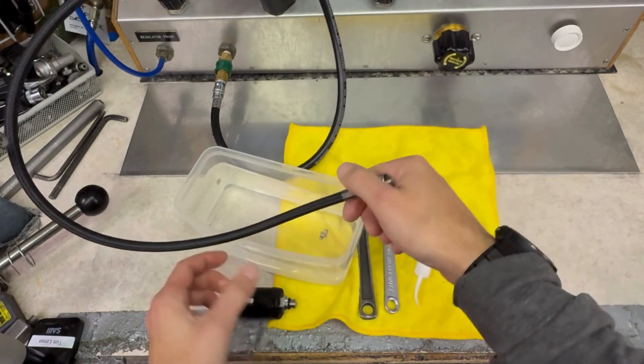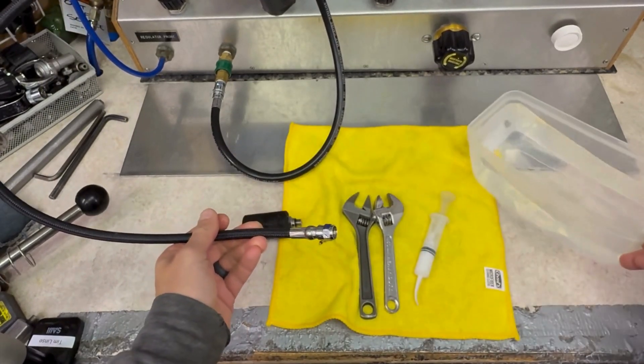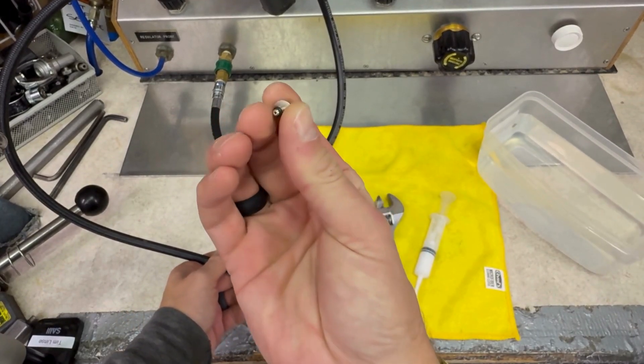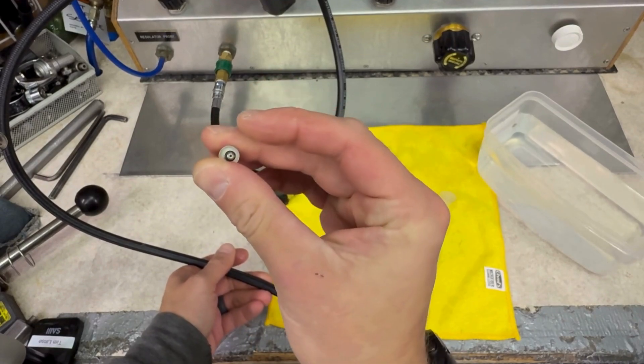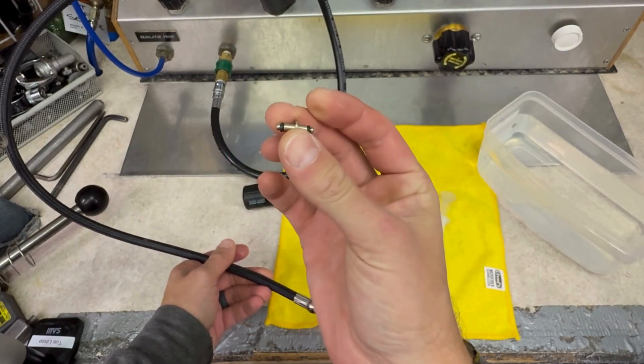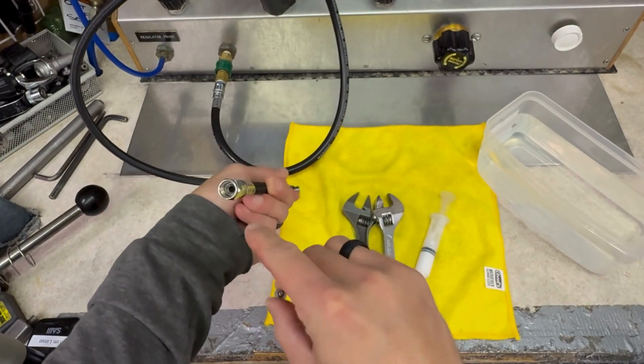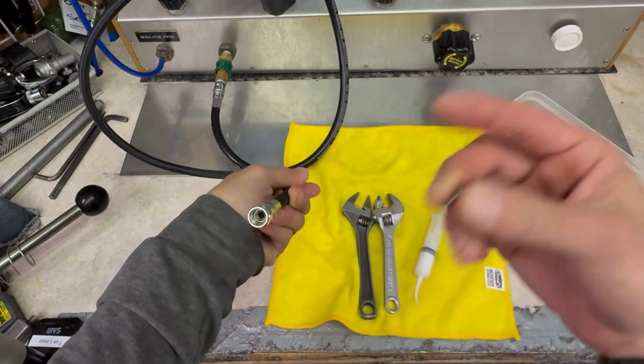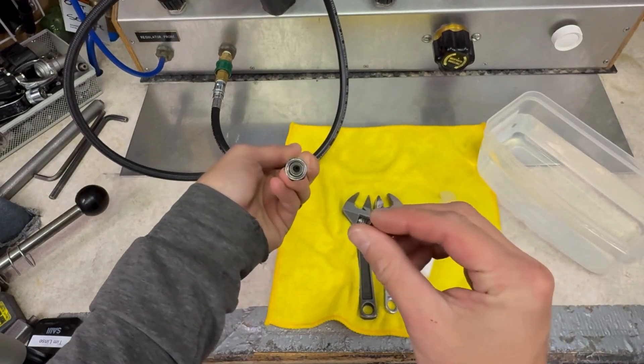So a high-pressure spool is a small piece of metal that has a hole going right through the center, and it has two O-rings. This is required to seal on the inside of high-pressure hoses, whether we're using a gauge or we're using an SPG.